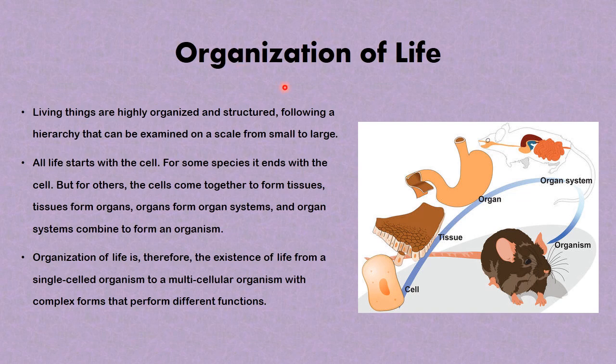We'll be looking at the topic organization of life. Living things are highly organized and structured, following a hierarchy that can be examined on a scale from small to large. All life starts with the cell; for some species it ends with the cell, but for others the cells come together to form tissues, tissues form organs, organs form organ systems, and organ systems combine to form an organism. Therefore, organization of life is the existence of life from a single cell organism to a multicellular organism with complex forms that perform different functions.